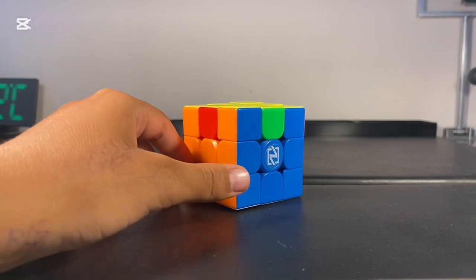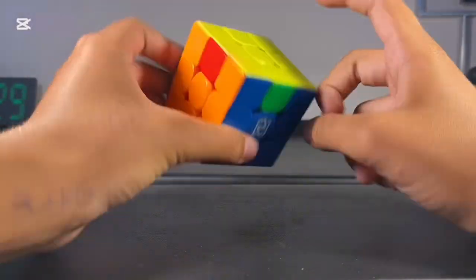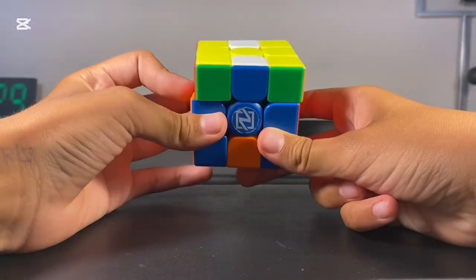Number three, the edges are swapped with their opposite, for example, blue with green. The algorithm for that is M-2-U-M-2-U-2-M-2-U-M-2.